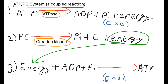We need to know the physiology of the ATP-PC system, which is a coupled reaction — where the product of one reaction is used as a reactant in another reaction. ATP is broken down by the enzyme ATPase into ADP (adenosine diphosphate) plus a phosphate plus energy. That energy is then used for muscular contraction, and that's an exothermic reaction.